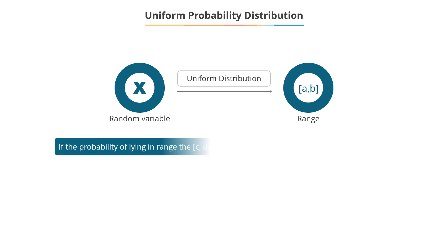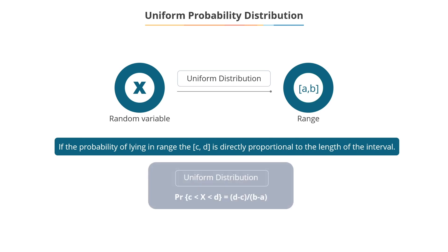A random variable x is said to follow a uniform distribution in the range a b if the probability of lying in the range c d is directly proportional to the length of the interval. Hence, probability c less than x less than d equals d minus c divided by b minus a.